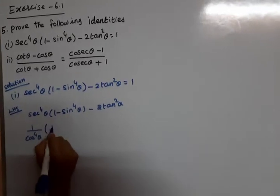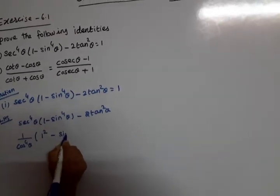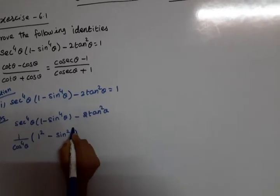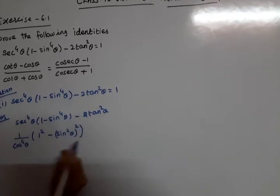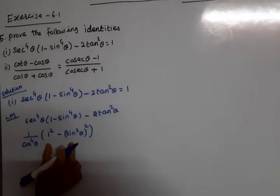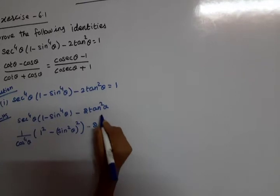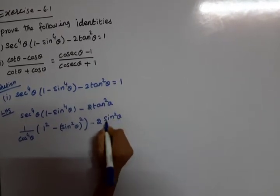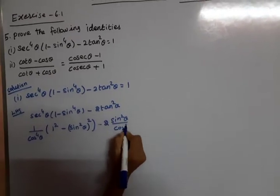This gives us (1 minus sin⁴θ) which is (1 squared minus sin²θ) whole squared, using the a² minus b² form. Minus 2tan²θ, which is 2sin²θ divided by cos²θ.